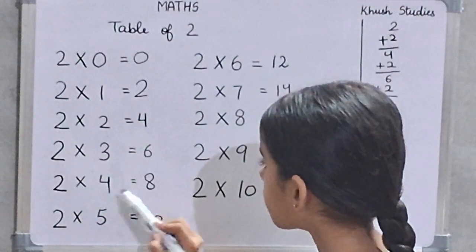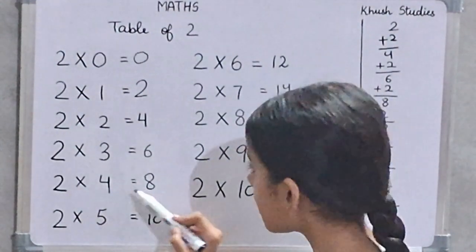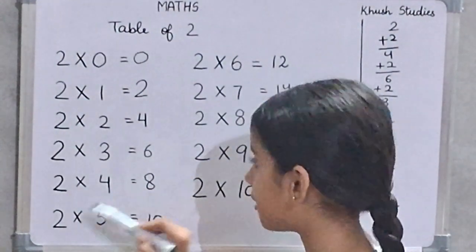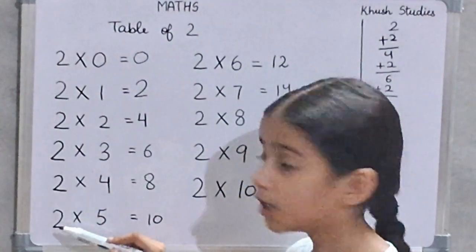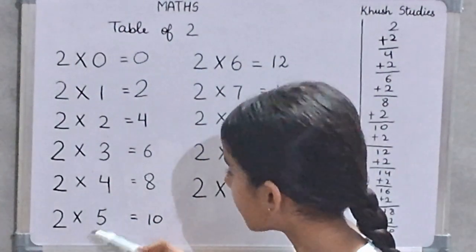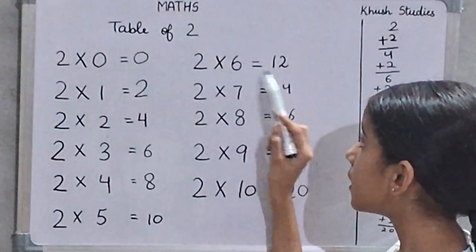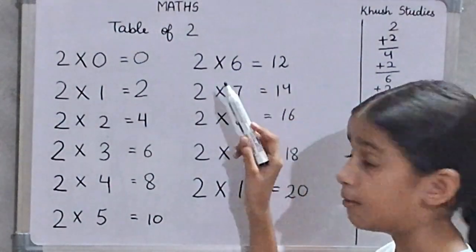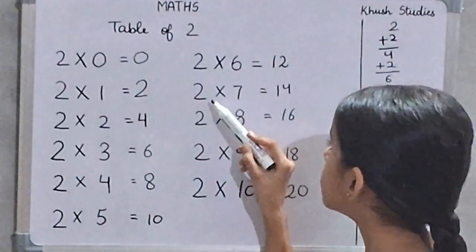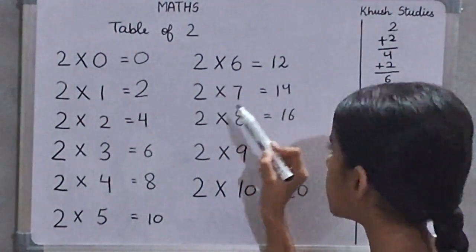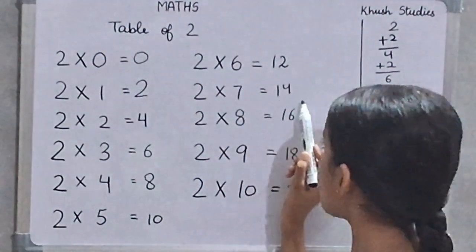2 times 4 is 8. 2 times 5 is 10. 2 times 6 are 12. 2 times 7 are 14.